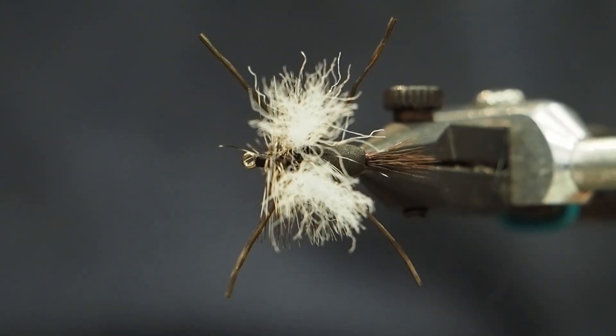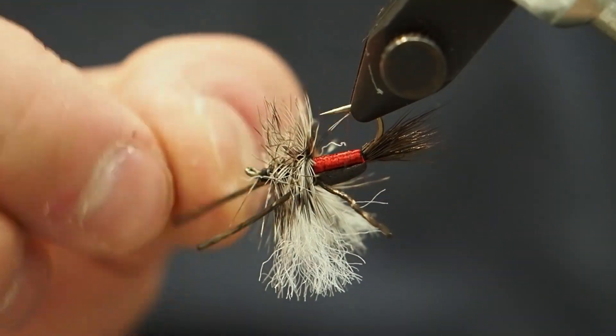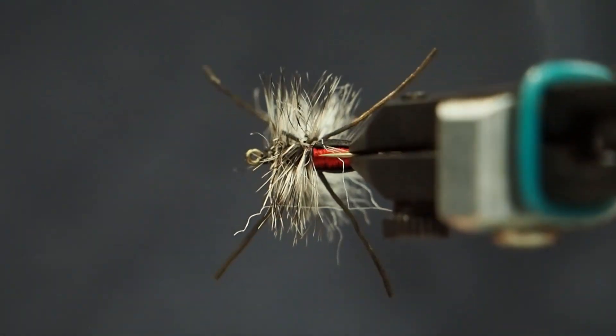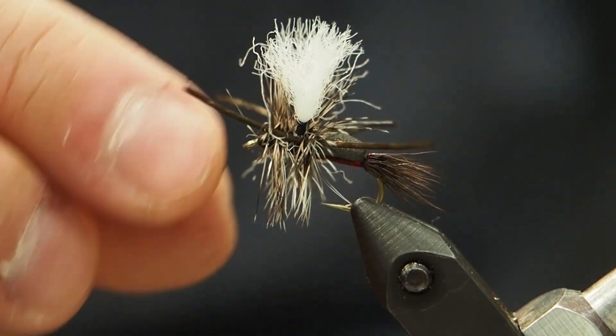This is a great high floating, nigh unsinkable fly, and cutthroat trout love them as well as our resident rainbows. Thanks so much for joining us. Remember to get all these materials at bowremertroutfitters.com.